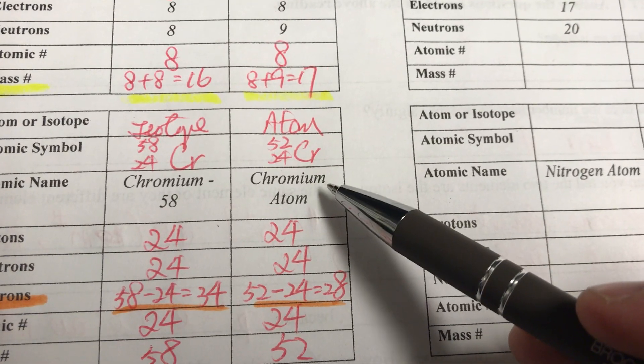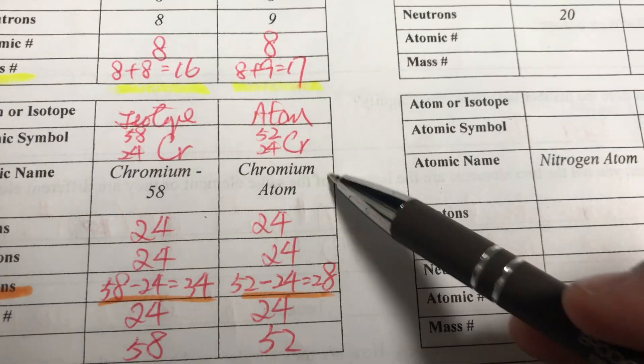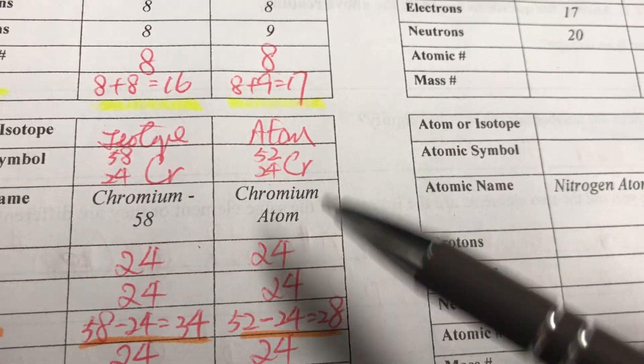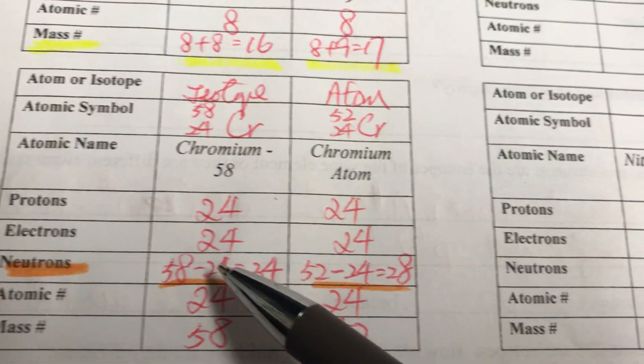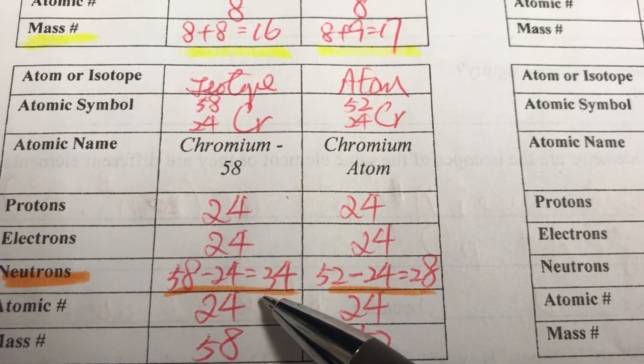Chromium atom will be an atom, so we have to use the periodic table, the atomic mass round number, which is 52. This is the atom, we can tell it's 52 because for atoms we can find the number from the periodic table, we round to 52. And then neutron, we have to use this equation: mass number minus atomic number. So 58 minus 24 is 34. 52 minus 24 is 28.